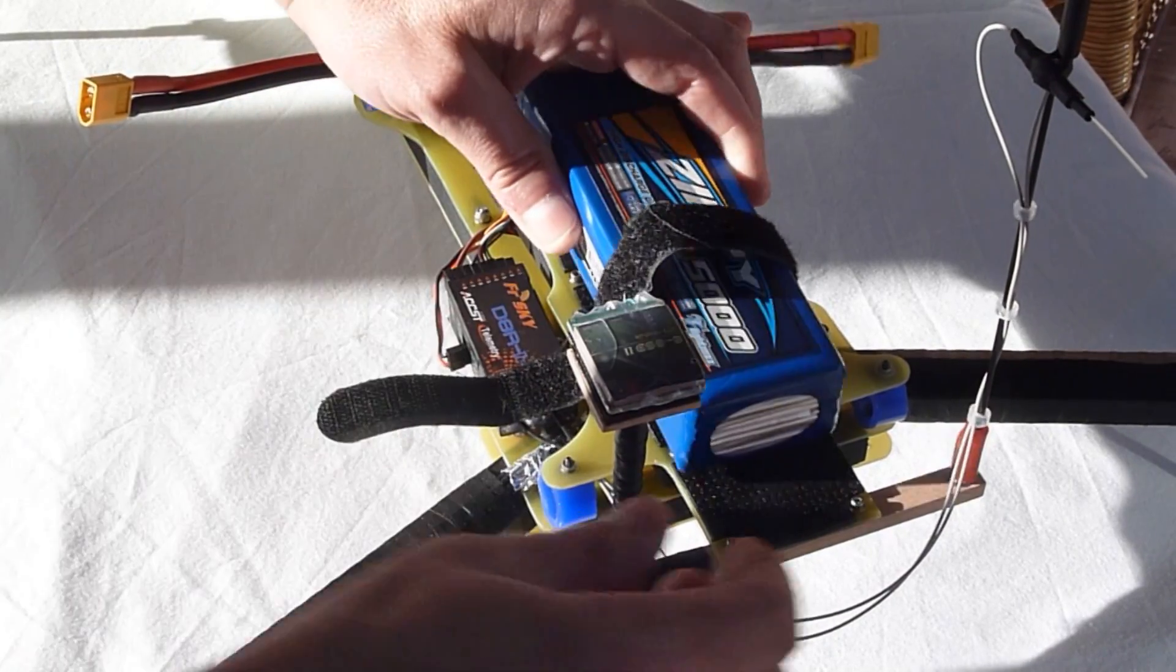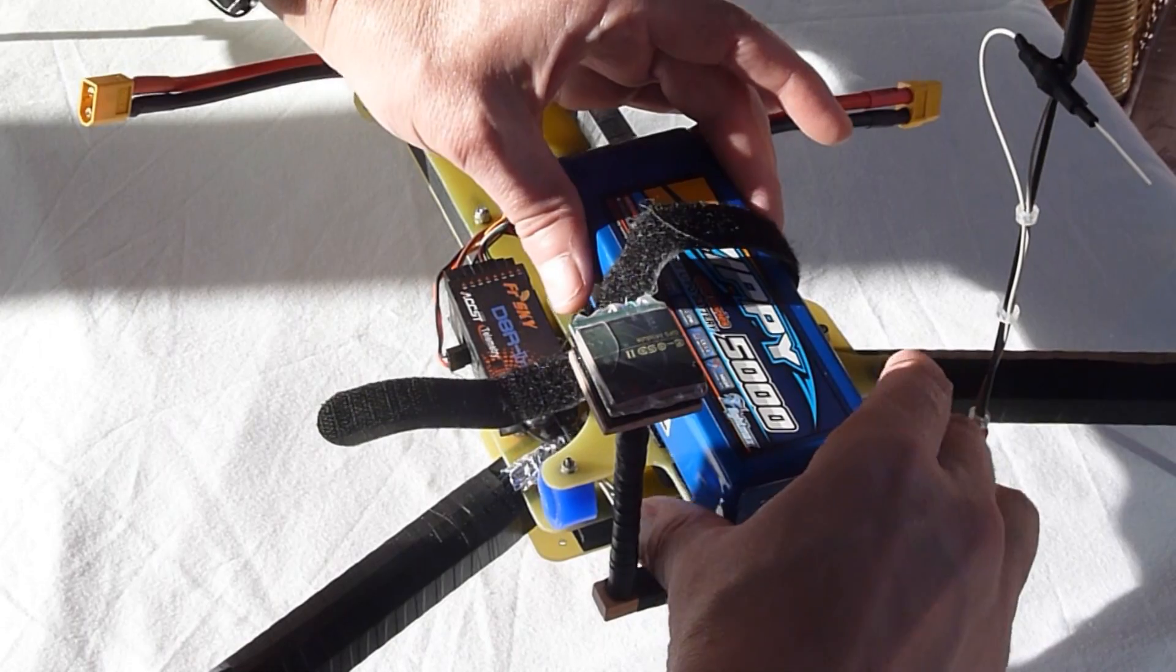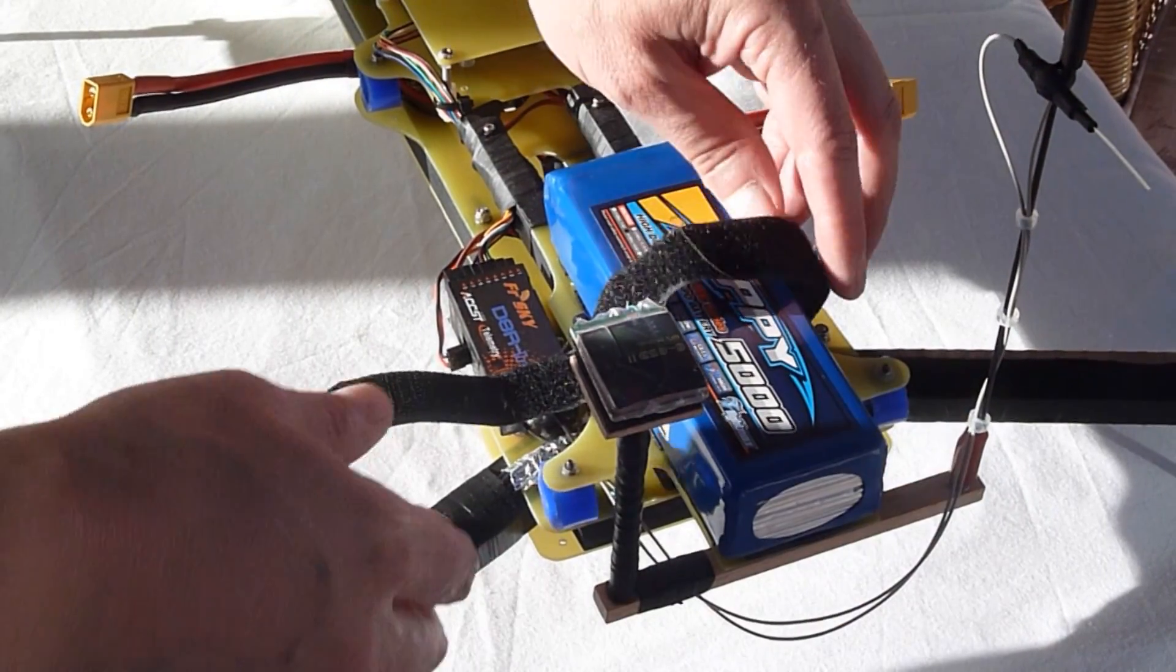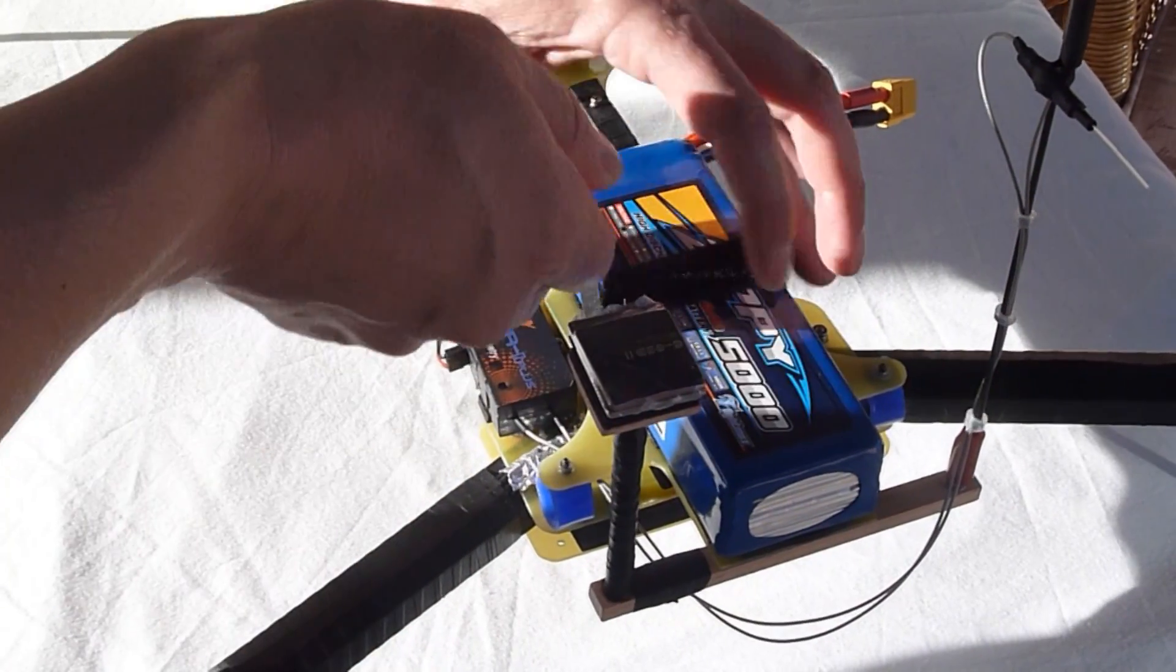The main flight battery is very easy to access and fit and it can be moved forwards or backwards to adjust for changes in centre of gravity.